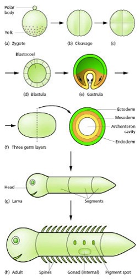Plants exhibit natural variation in their form and structure. While all organisms vary from individual to individual, plants exhibit an additional type of variation: within a single individual, parts are repeated which may differ in form and structure from other similar parts. This variation is most easily seen in the leaves of a plant, though other organs such as stems and flowers may show similar variation. There are three primary causes: positional effects, environmental effects, and juvenility.